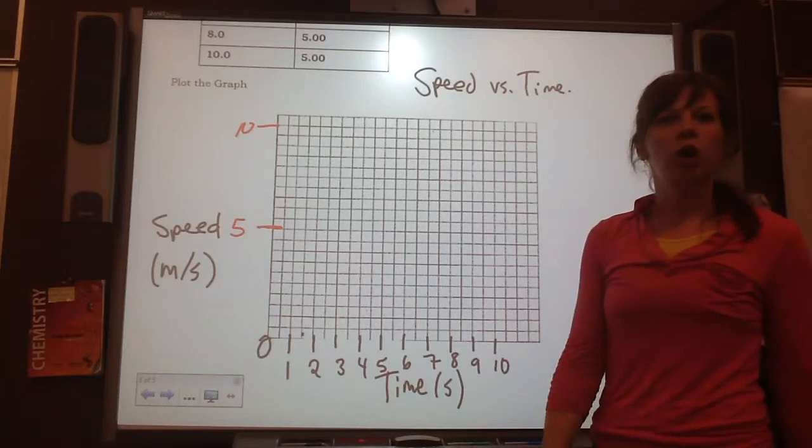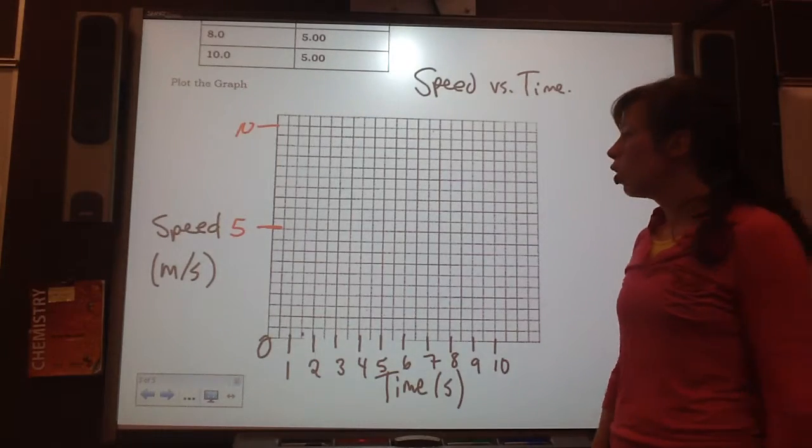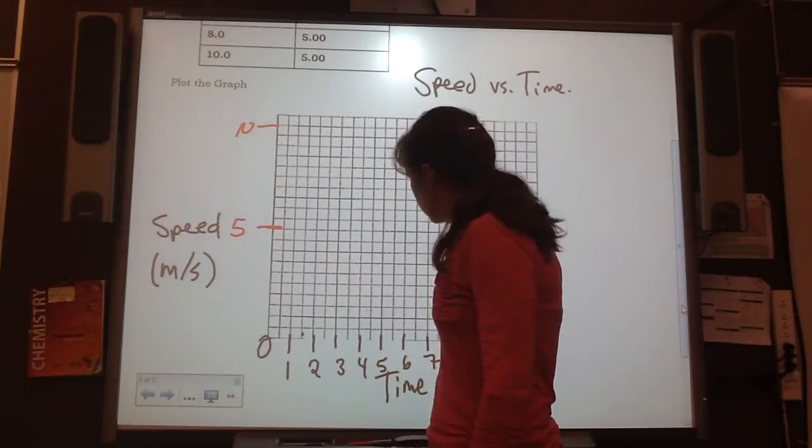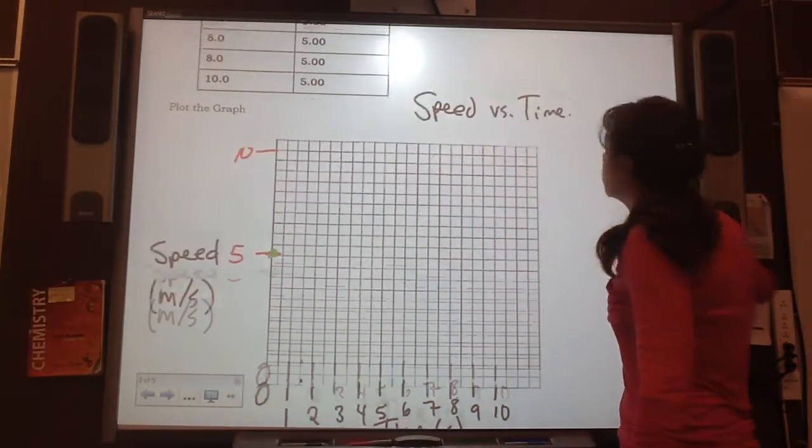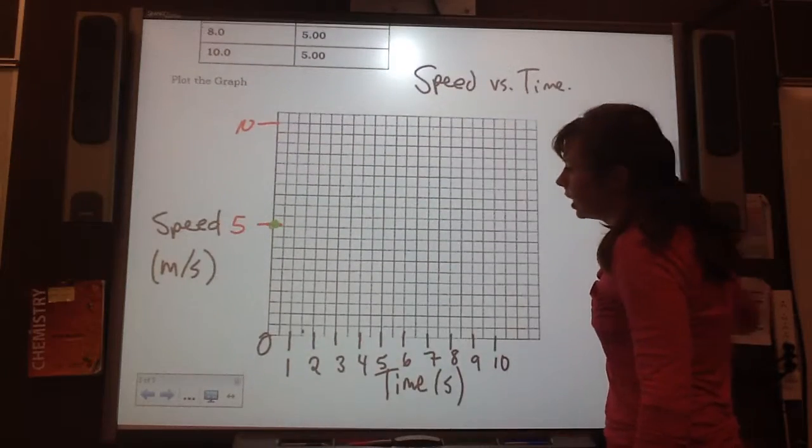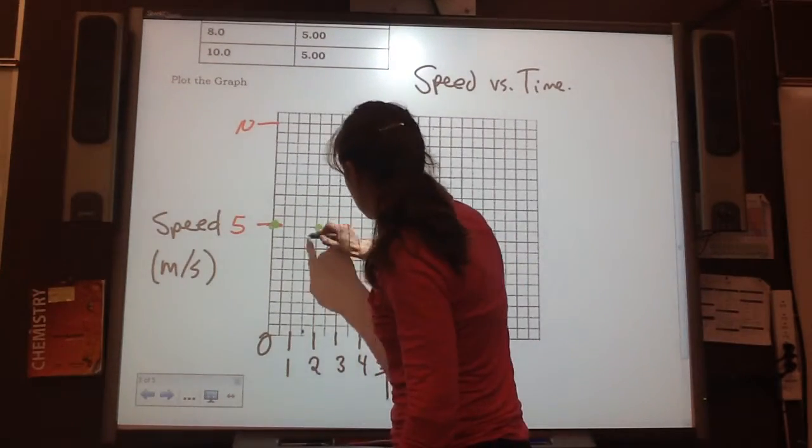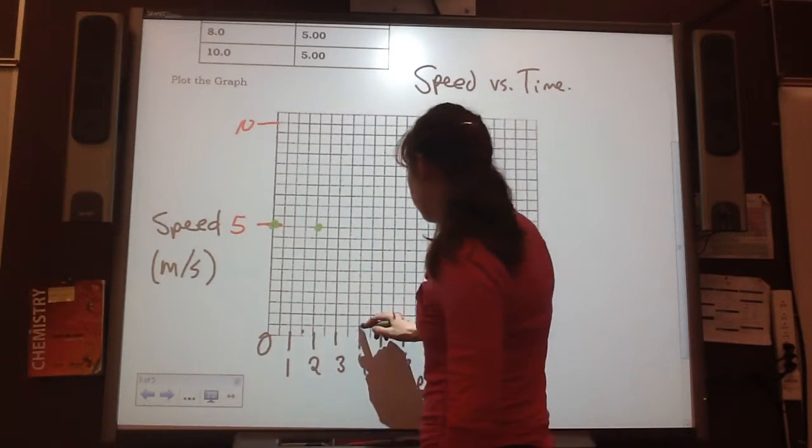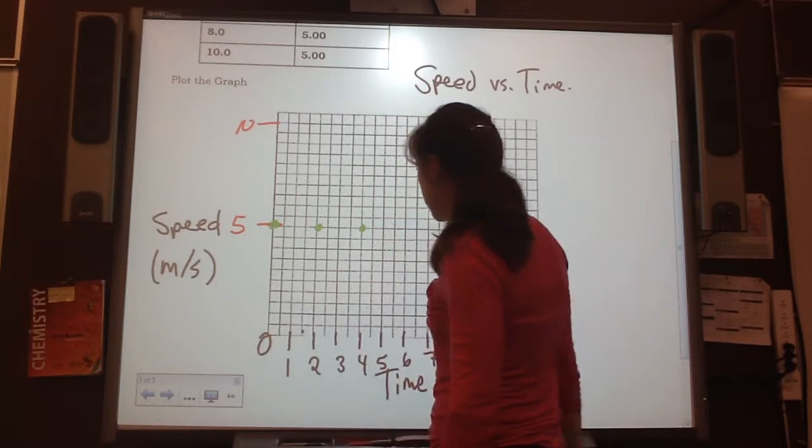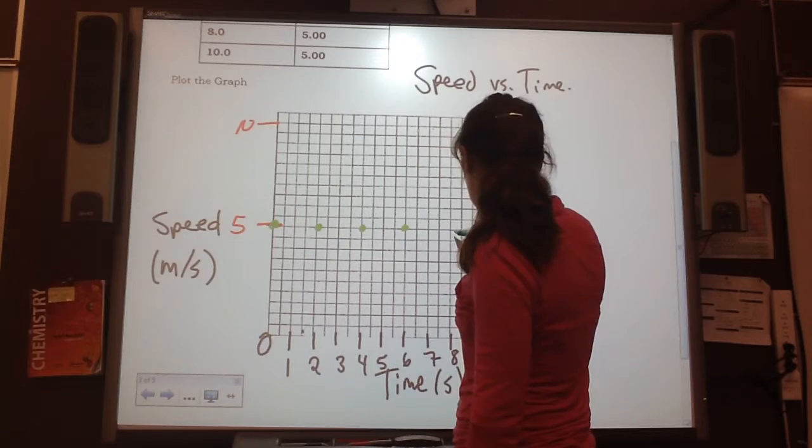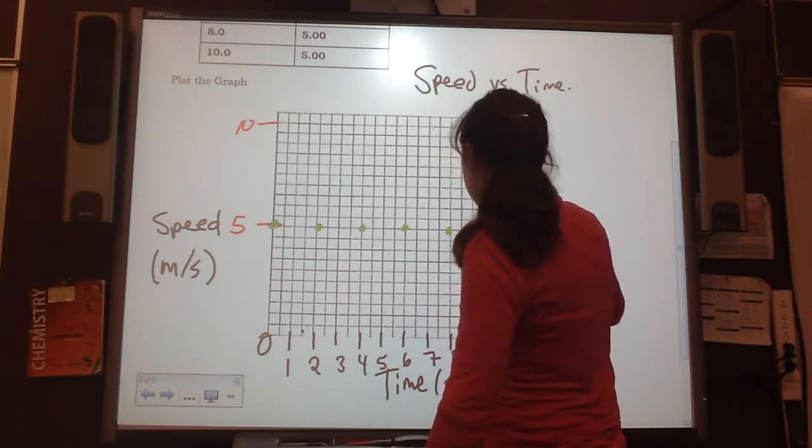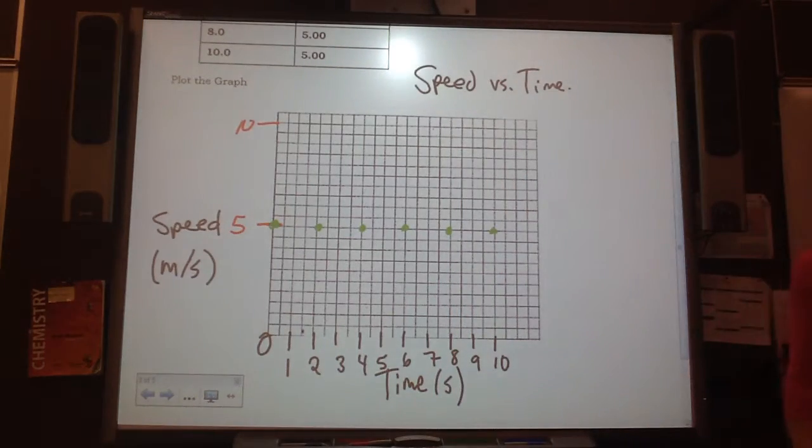Okay, so at zero, it is five meters per second. At two, it is five meters per second. At four, five meters per second. Look at that. I'm pretty sure six, eight, and ten, they're all five meters per second.